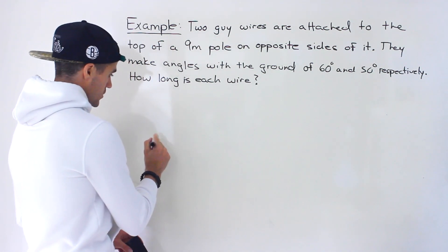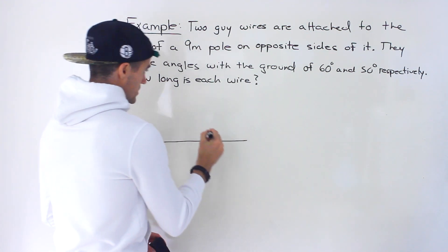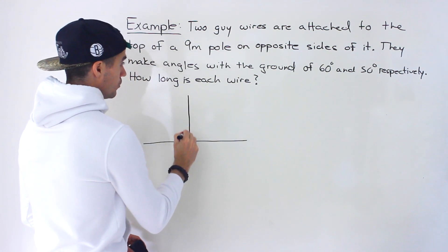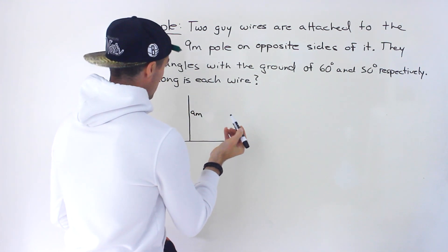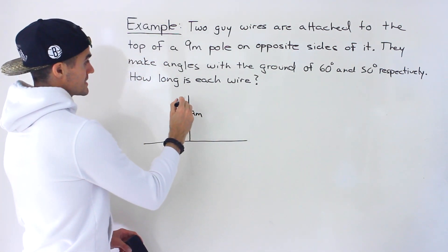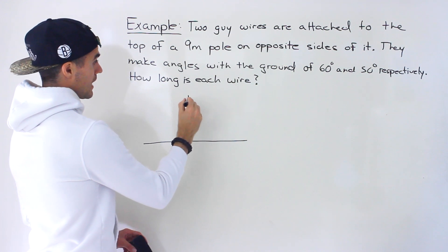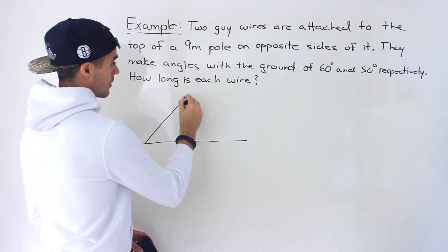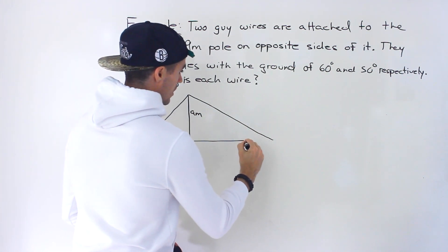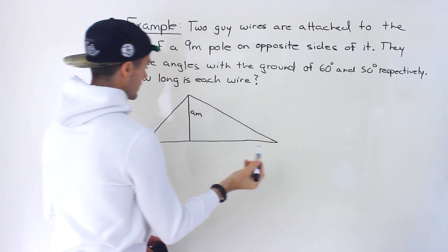So like usual, let's try to draw a diagram of what's happening here. So let's say this is the ground. This is the pole over here. So this pole is nine meters. And so what's happening is that we have two guy wires that are attached on opposite sides like this.